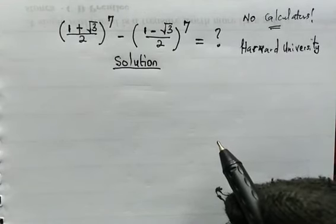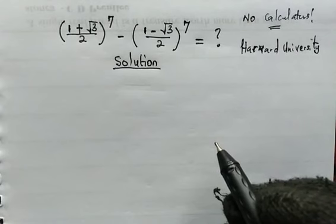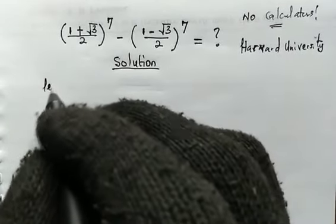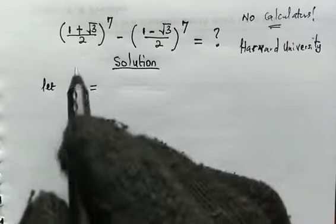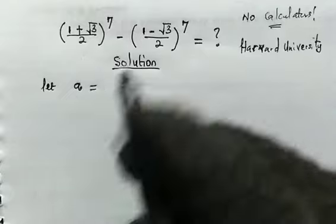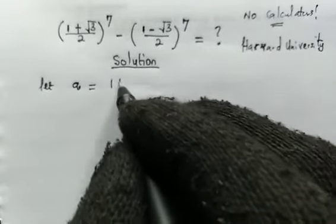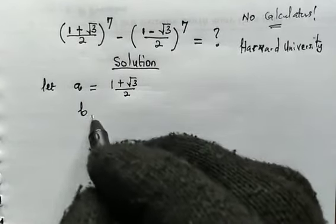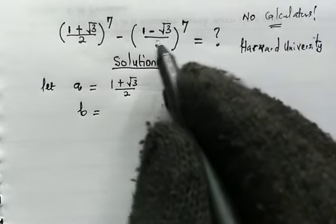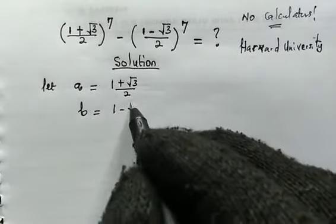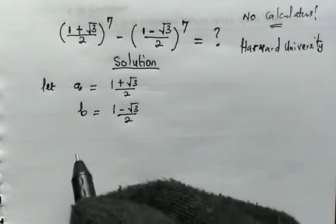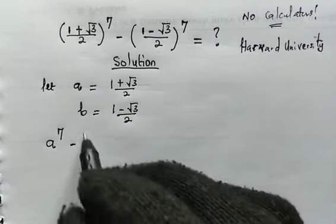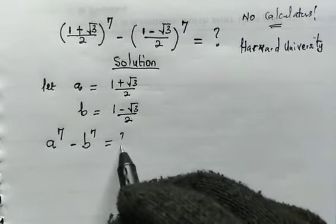In this video, I'll be presenting only one solution, and that will be algebraic manipulations. For my solution, we're going to let A equal the first expression inside the bracket, which is (1 + √3)/2, and we're going to let B equal the expression in the second bracket, which is (1 − √3)/2. So we are here to evaluate A to the power of 7 minus B to the power of 7.